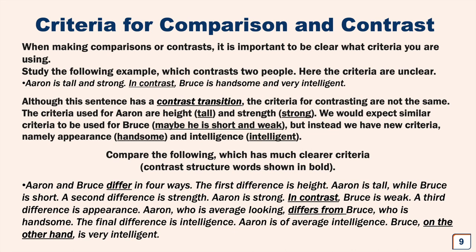Let's compare the following, which has much clearer criteria. Contrast structure words shown in bold and underlined. Aaron and Bruce differ in four ways. The first difference is height. Aaron is tall, while Bruce is short. A second difference is strength. Aaron is strong. In contrast, Bruce is weak. A third difference is appearance. Aaron, who is average looking, differs from Bruce, who is handsome. The final difference is intelligence. Aaron is of average intelligence. Bruce, on the other hand, is very intelligent. So in this paragraph you can see how we use contrast structure words to show the differences between Aaron and Bruce.